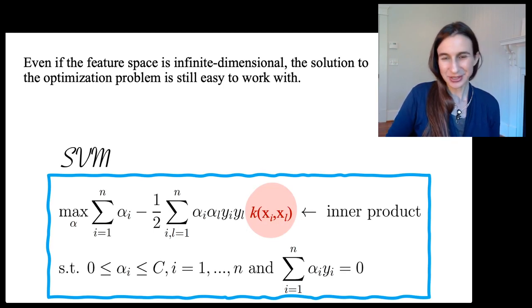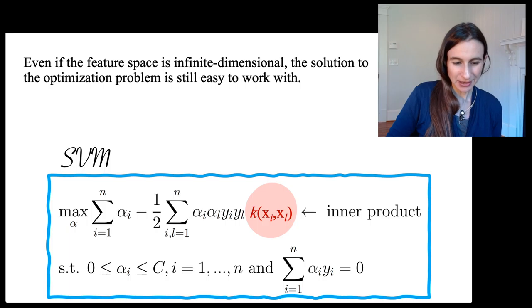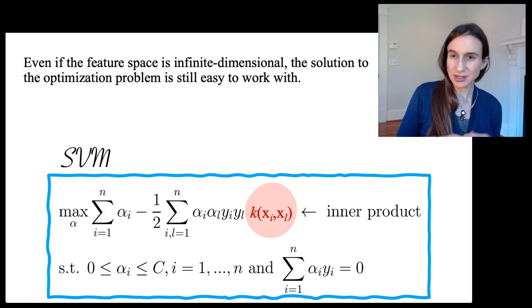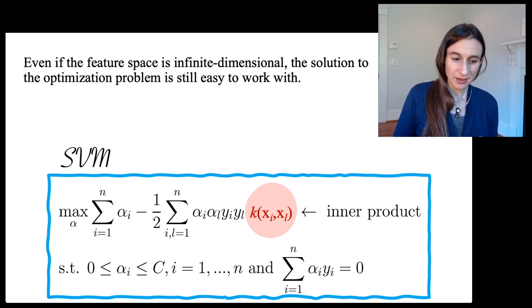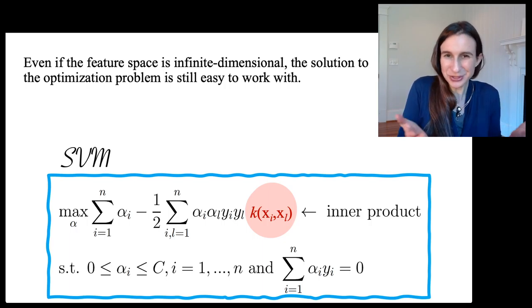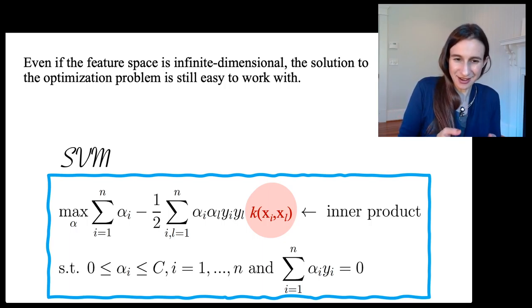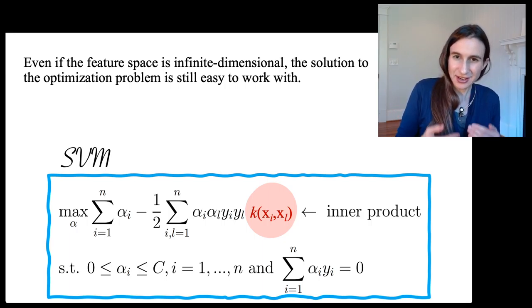This is the SVM dual problem. Even if you replace the dot products between the x's with the kernel, you still have the same solution. The solution is still the alpha_i stars, and there are still n of them, where n is the number of data points.